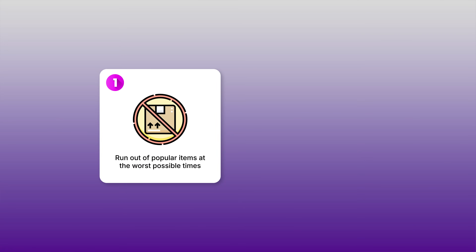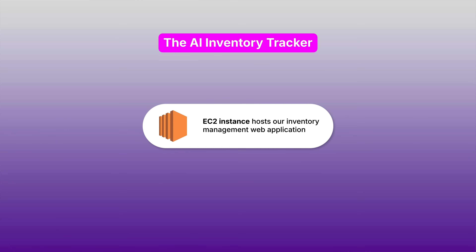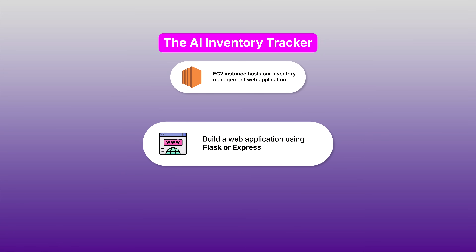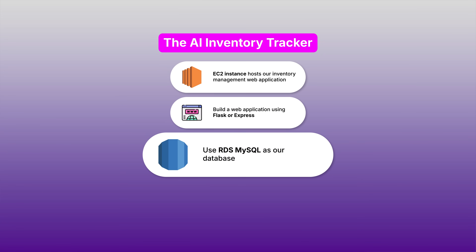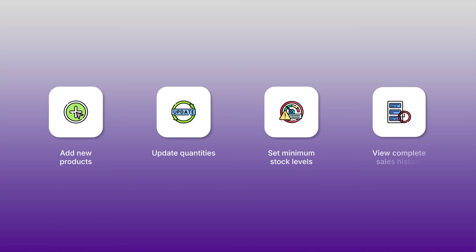Project number five: the AI inventory tracker. Small retailers, restaurants, and service businesses struggle to keep track of their inventory, leading to two costly problems. First, they run out of popular items at the worst possible times like during rush hours. Second, they waste money on slow-moving inventory. This project creates a powerful inventory management system using EC2, RDS MySQL, and AI automation. We start with an EC2 instance hosting our inventory management web application — think of it like a private website that only the business owner and staff can access. We build the web app using Flask for Python or Express for Node.js, and use RDS MySQL as our database to handle all inventory data: products, suppliers, sales records, and stock levels. Business owners or employees can log in to add new products, update quantities when they receive shipments, set minimum stock levels for each item, and view complete sales history.